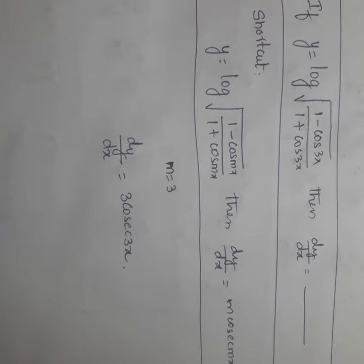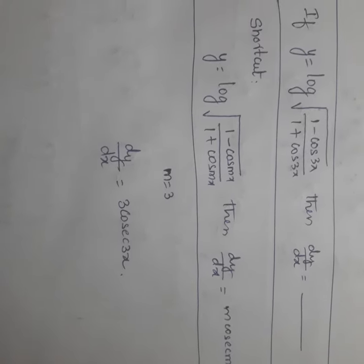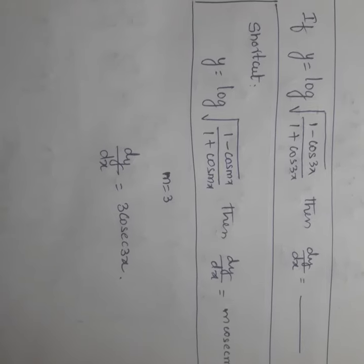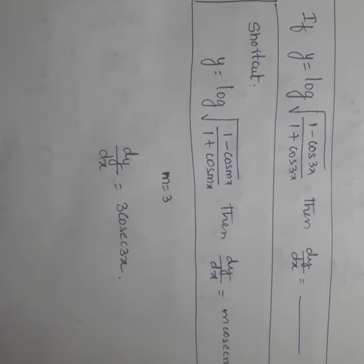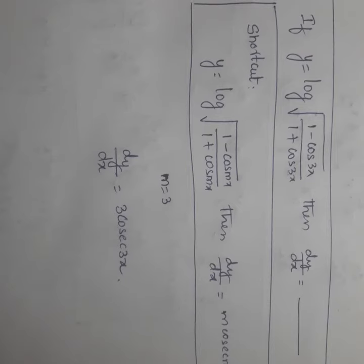Hi friend, welcome back to my YouTube channel. Today I come up with one more shortcut to solve the problem. If y is equal to log under root of 1 minus cos 3x by 1 plus cos 3x, then dy by dx is equal to dash.